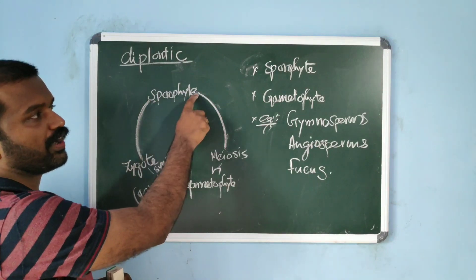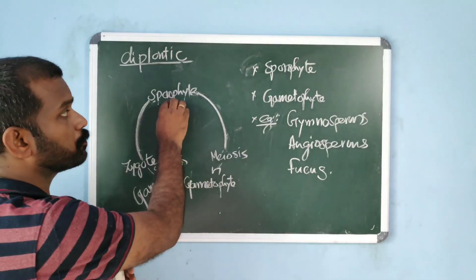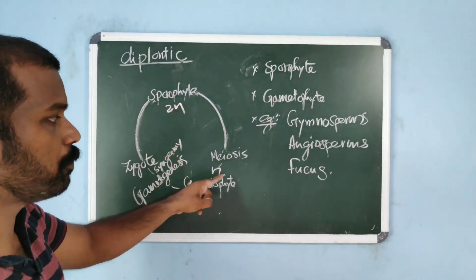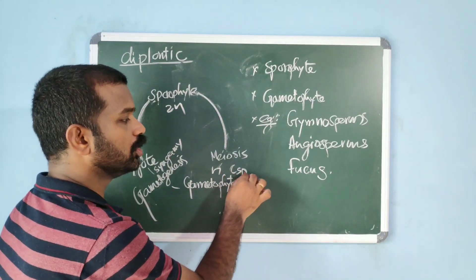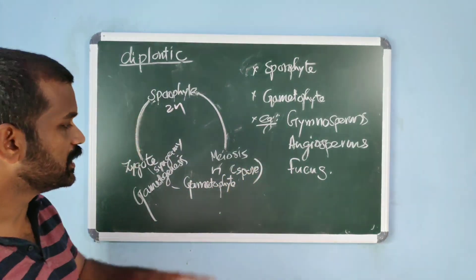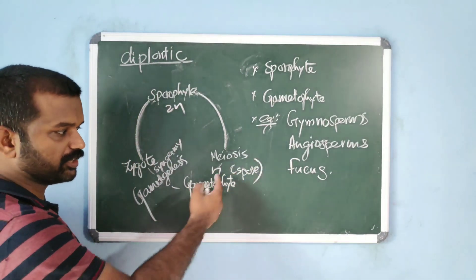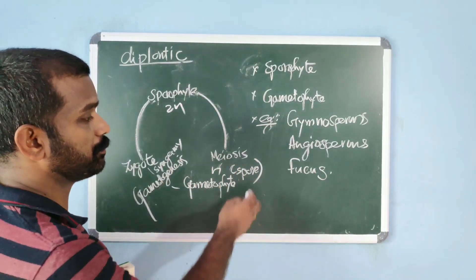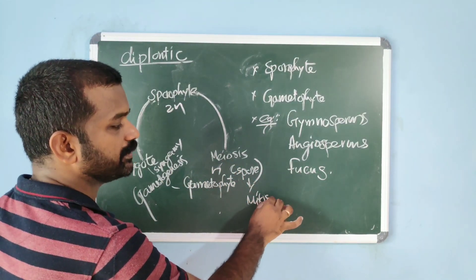The diploid sporophyte produces haploid spore through meiosis. Spore germinates to form gametophyte. That means spore undergoes mitosis during the development.